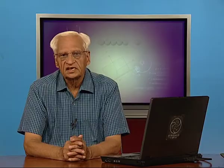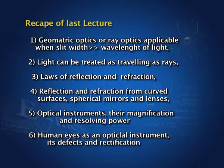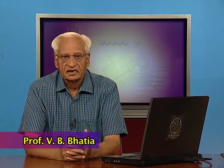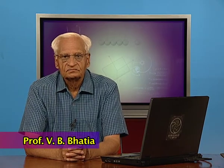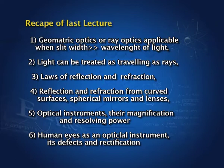The last lecture was the last in the series on geometrical optics. In geometrical optics, light can be treated as traveling as rays. We discussed laws of reflection and refraction, then reflection and refraction from spherical surfaces like mirrors and lenses. We discussed optical instruments including the human eye. We found the magnification and resolving power of optical instruments, and we found the defects of the human eye and how to rectify them.